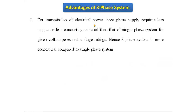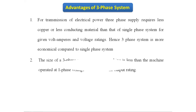The first advantage: for transmission of electrical power, a three-phase supply requires less copper, or less conducting material, than a single-phase system for the same volt-ampere and voltage ratings. Hence, the three-phase system is more economical compared to the single-phase system, because it requires less conducting material.